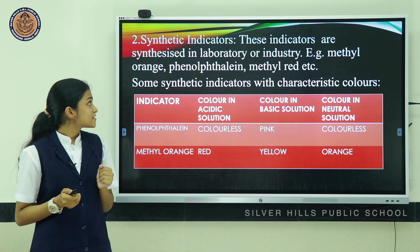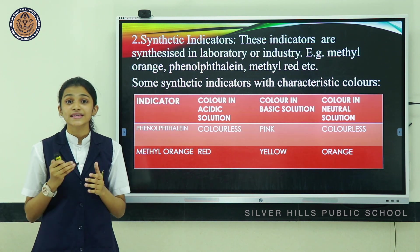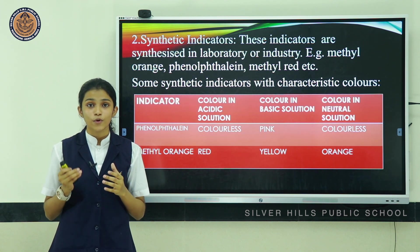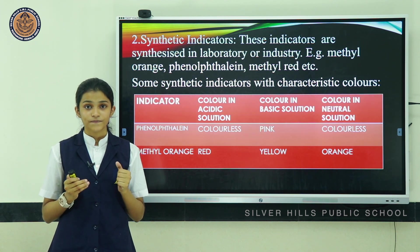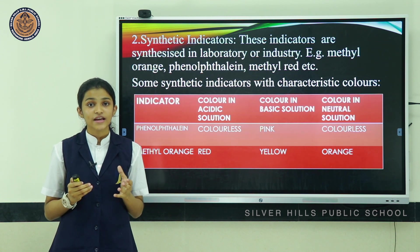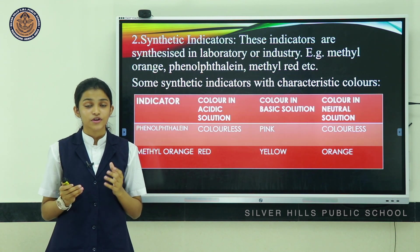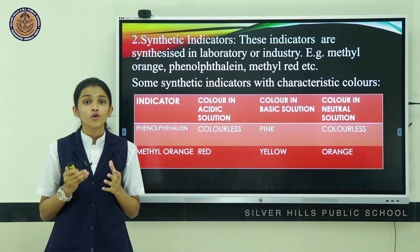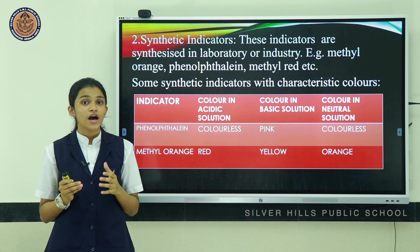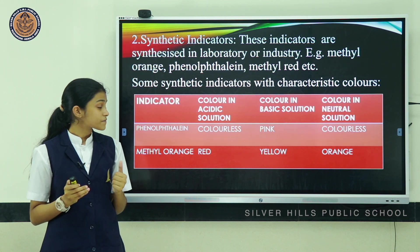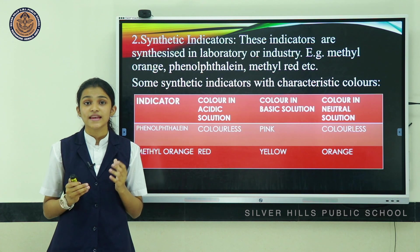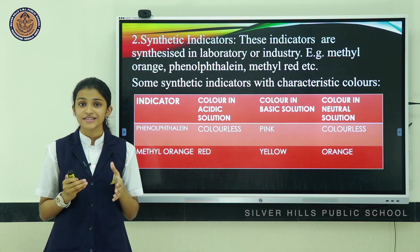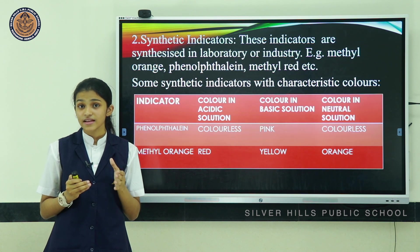The second classification of indicators is synthetic indicators — these are synthesized in the laboratory or industry. Examples include methyl orange, methyl red, and phenolphthalein. Some synthetic indicators along with their characteristic colors are provided in the table. Phenolphthalein is colorless in acidic medium and shows pink color in basic medium.